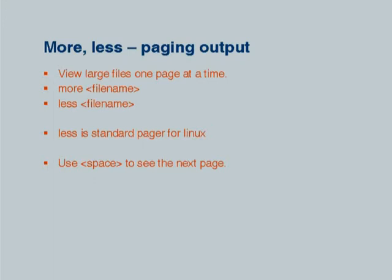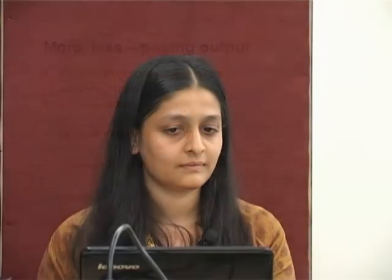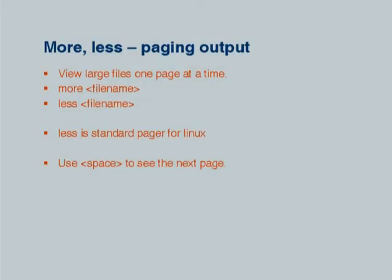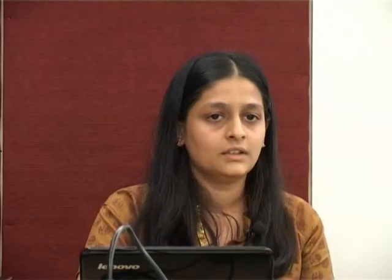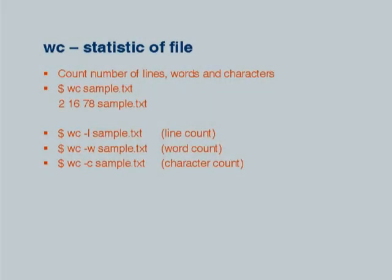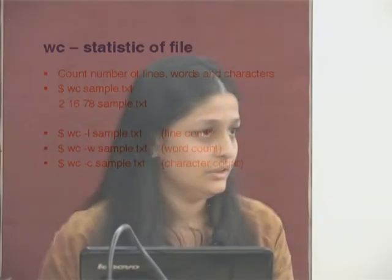For long files that don't fit on one page, there is more and less to see one page at a time, similar to the manual. The wc command shows statistics of a file: the number of lines, words, and characters. Options minus l, minus w, and minus c represent those counts respectively.